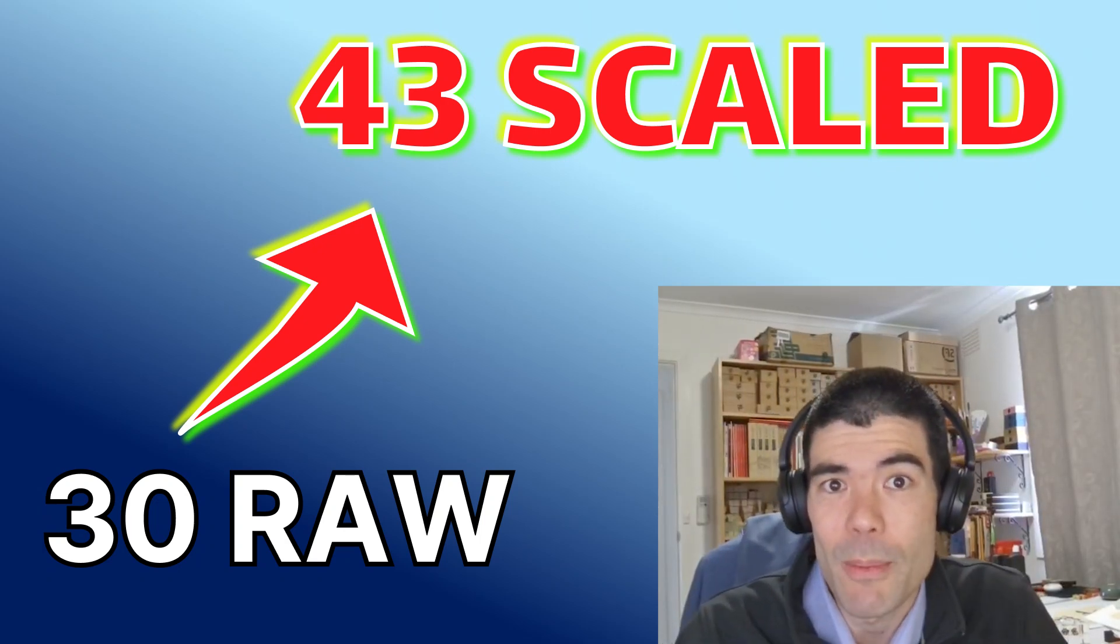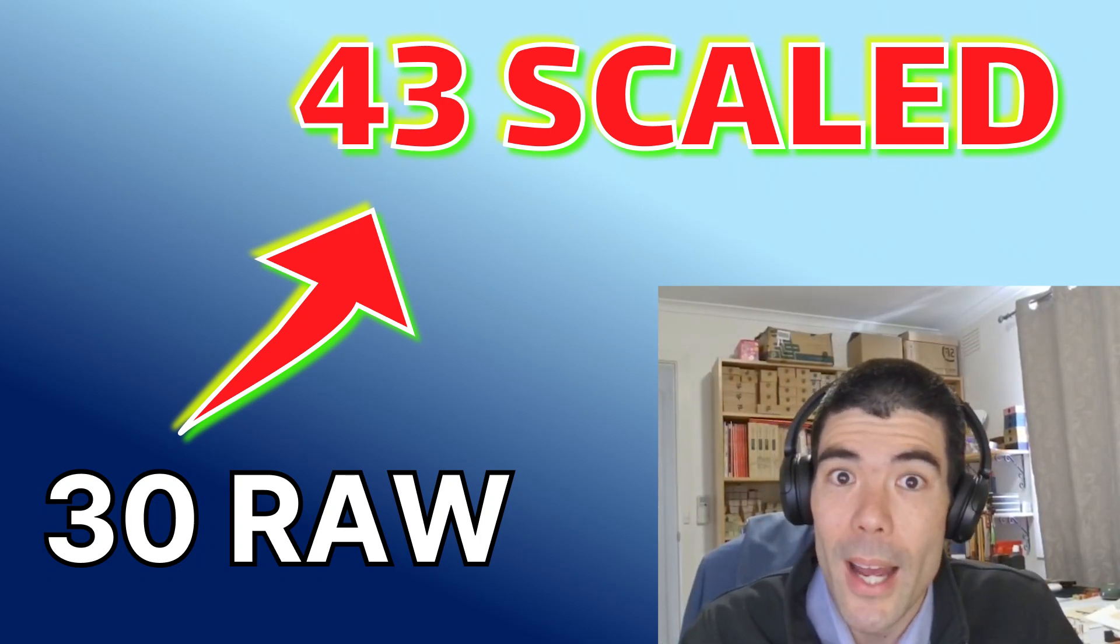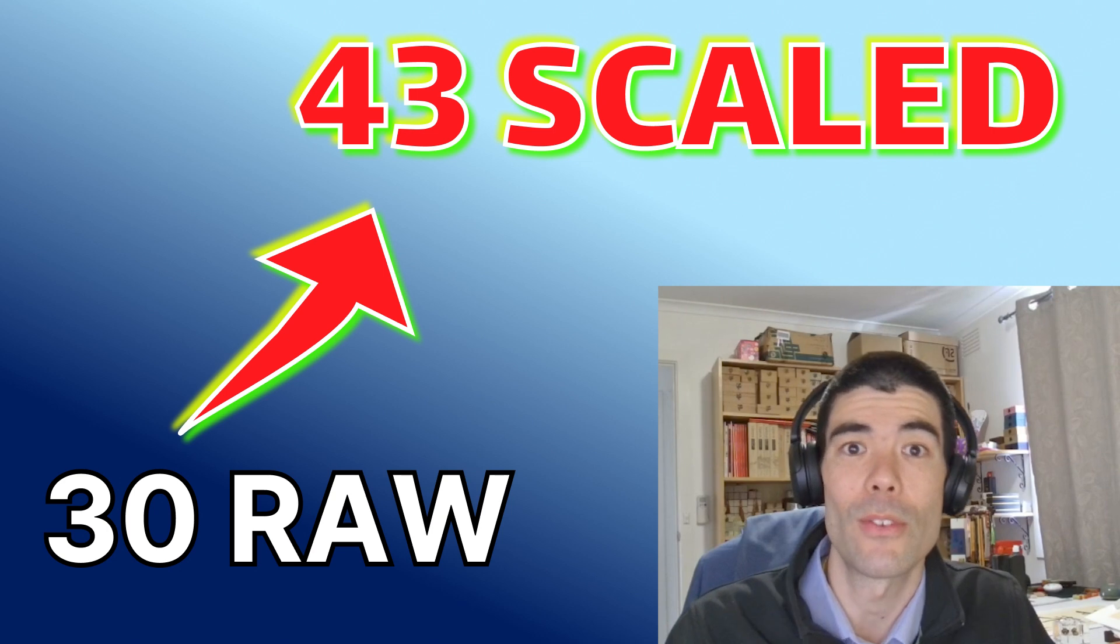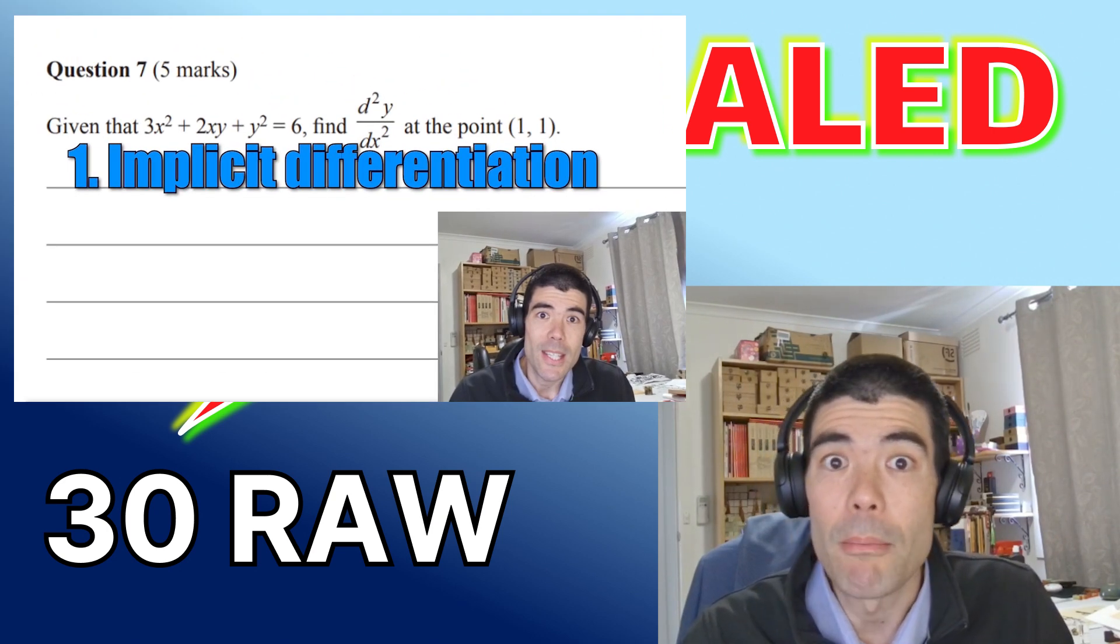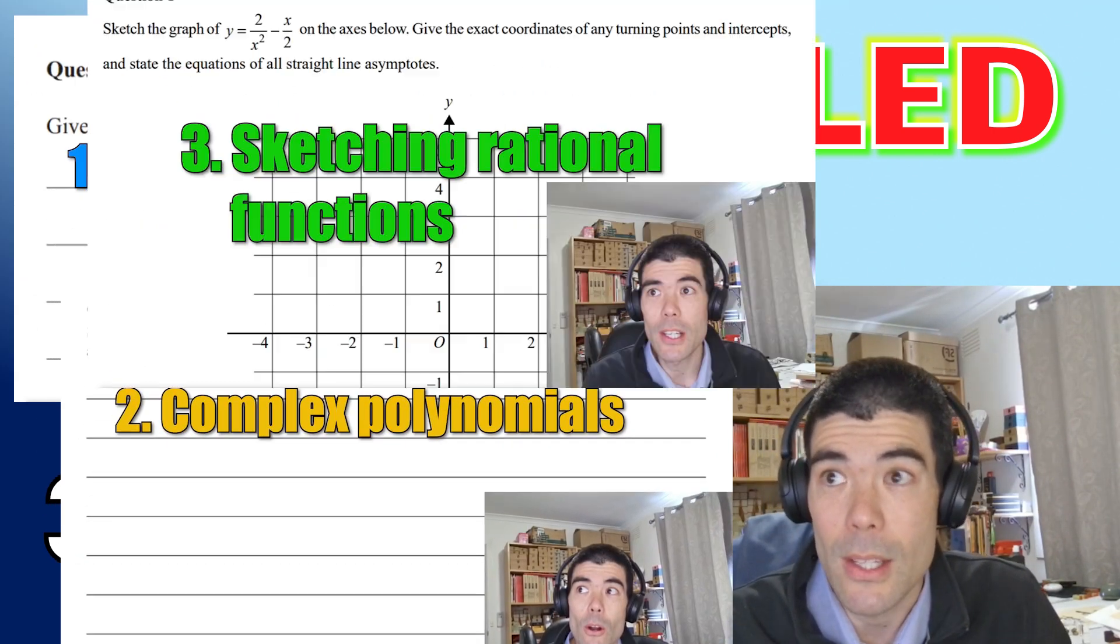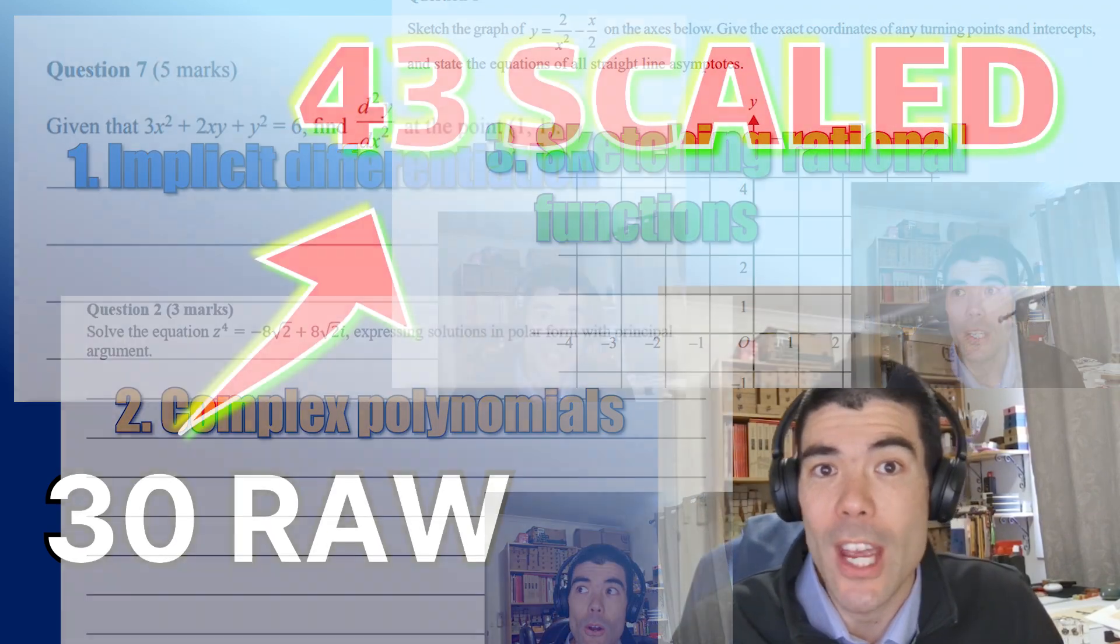It is not easy to get a raw 30 in specialist mathematics. There's a reason why it scales up to 42 or 43, but by practicing and mastering skills like the five key skills we'll look at in this video, you can give yourself every chance.